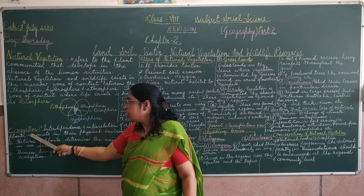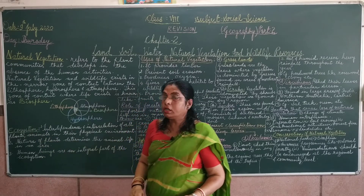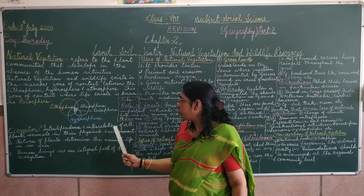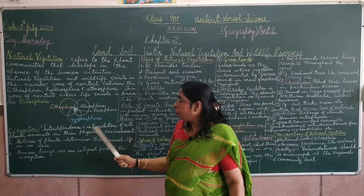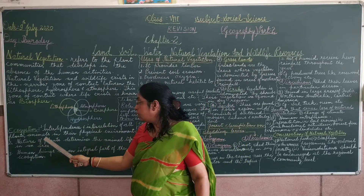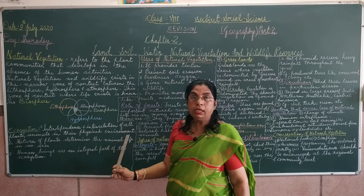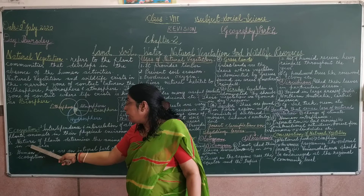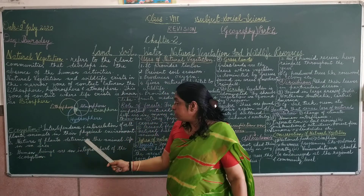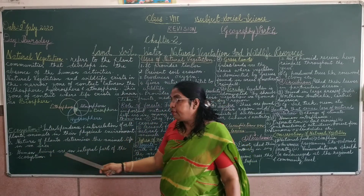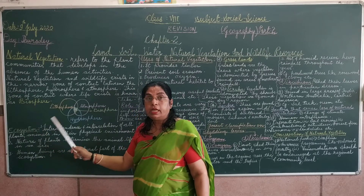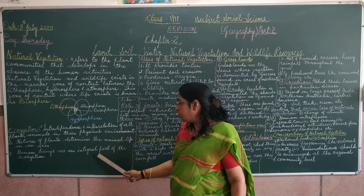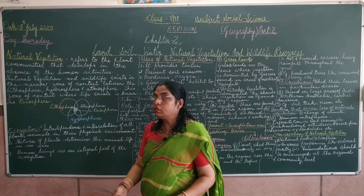The next point is ecosystem. What is ecosystem? Ecosystem refers to the interdependence and interrelation of all plants and animals in their physical environment. The nature of plants determines the animal life in an area, and human beings are an integral part of the ecosystem.